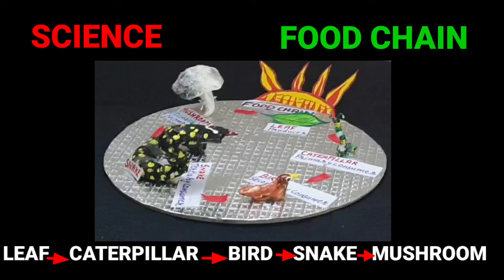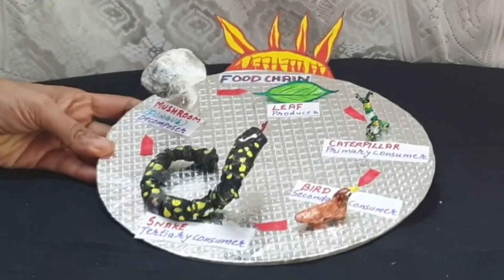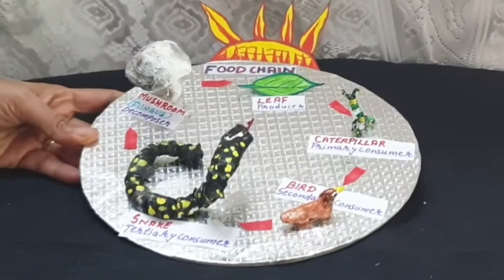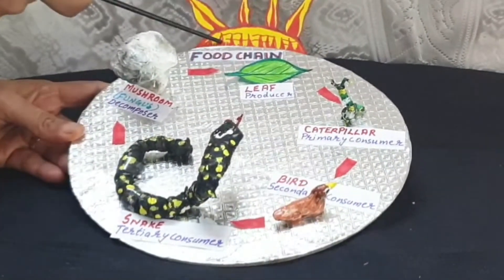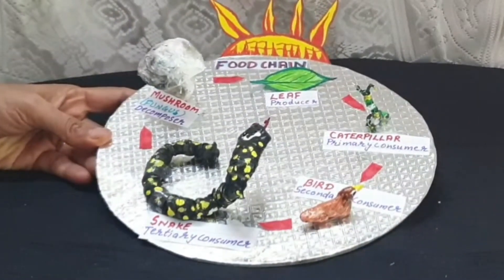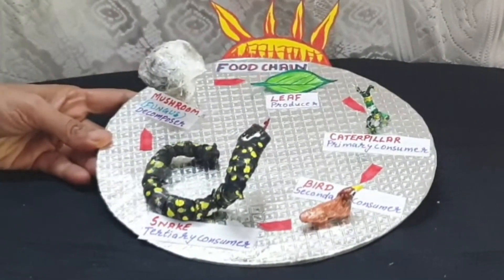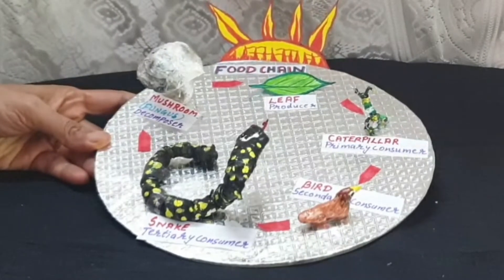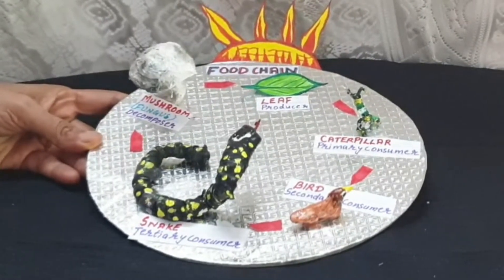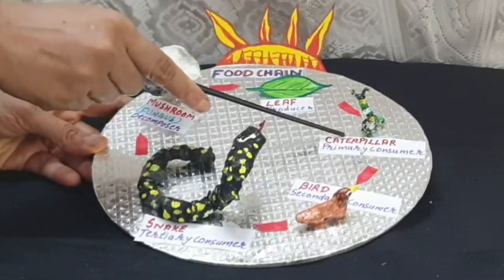A food chain is a series of organisms where all organisms are dependent on the next organism as a source of food. In this food chain, the leaf is the producer organism, a part of the plant which uses sunlight energy to prepare food by the process of photosynthesis.